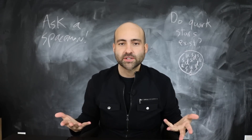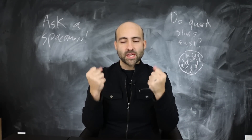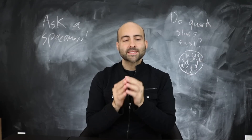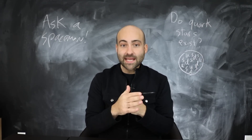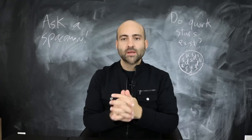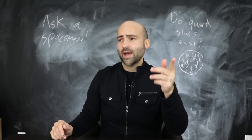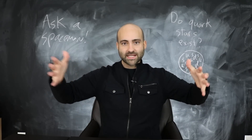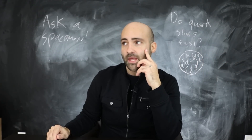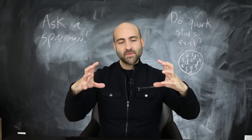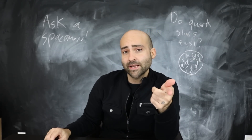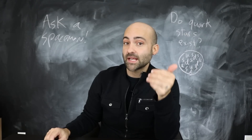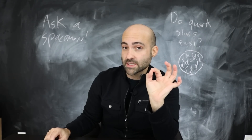We live in a world with degeneracy pressure. The very basic idea is that no two fermions — fermions being a kind of particle like an electron, proton, or neutron — can occupy the exact same quantum state. They can't have identical spin, positions, energy levels, etc. What does this give us? It gives us atoms, metals, metallic hydrogen in the cores of gas giants, and degenerate states of matter like white dwarfs, neutron stars, and possibly quark stars.